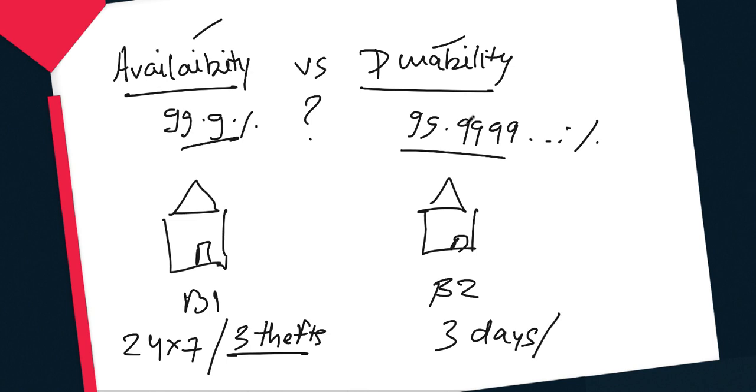Whereas Bank 2 has had zero such incidents, so it is very secure from that perspective. If given a choice between Bank 1 and Bank 2, I would rather go for a bank which might be less available but highly durable.